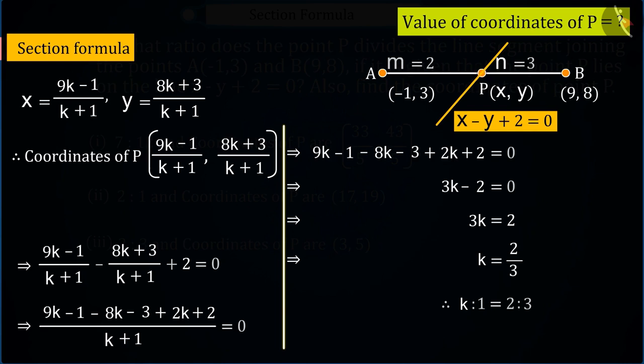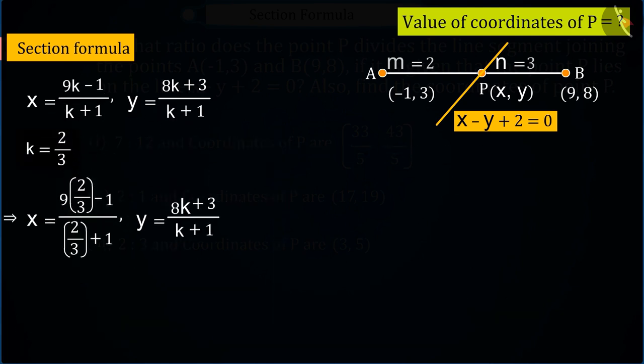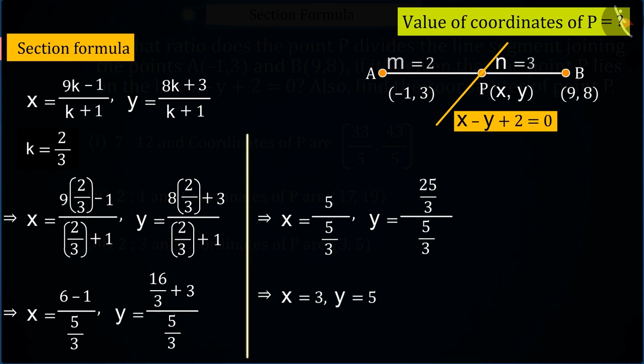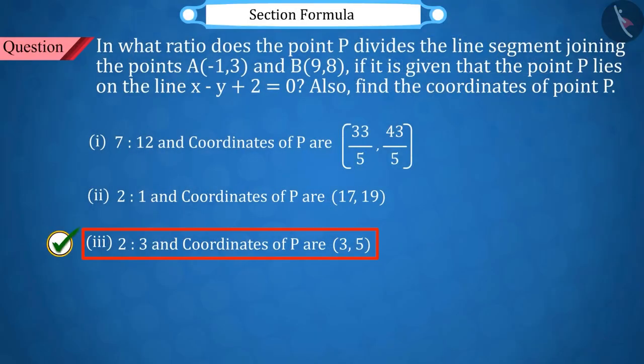Since we now know the ratio of P, therefore, in the coordinates of P obtained from the section formula, put the values of k, which gives the coordinates of P as (3, 5). Thus, option 3 is the correct answer.